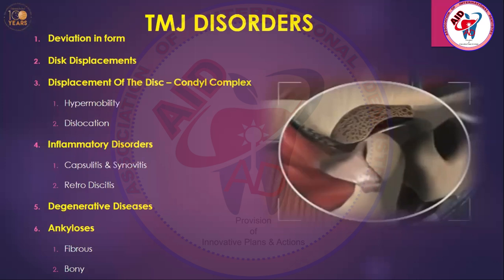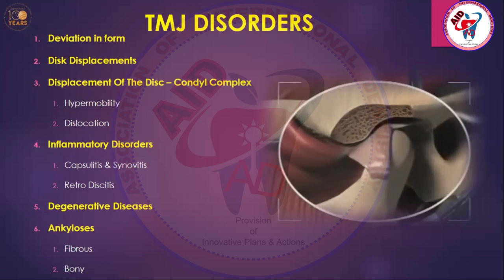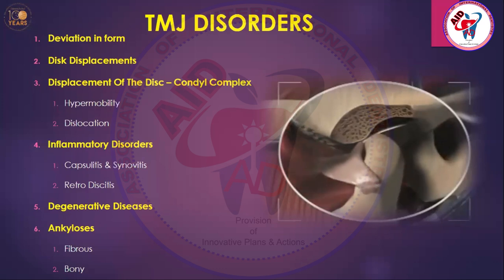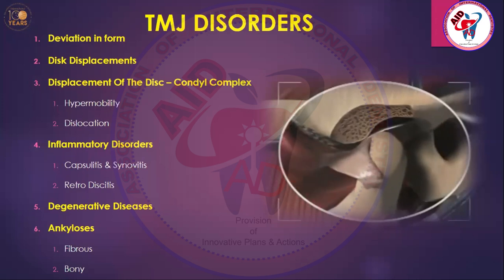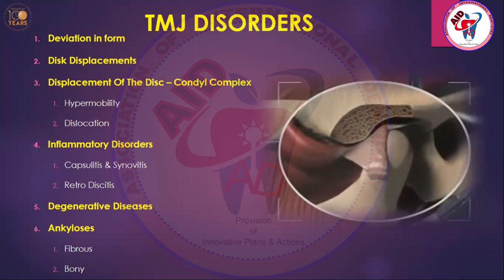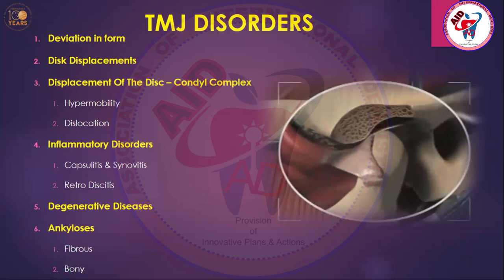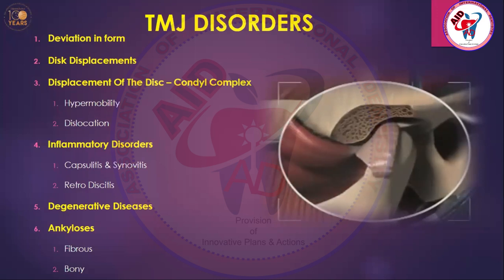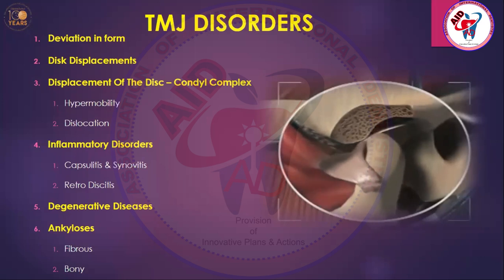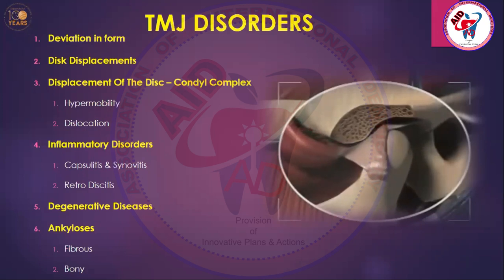Dislocation is the absolute removal of the joint from the socket. As those studying TMJ anatomy have seen, there is a most anterior limit of the temporomandibular joint oriented by a condensation of bone just anterior to the glenoid fossa, which is called the eminence. If the condyle leaves this boundary and shifts anterior to the condylar fossa, that is called dislocation. It may be unilateral — one joint dislocated — or bilateral, meaning both joints are dislocated.